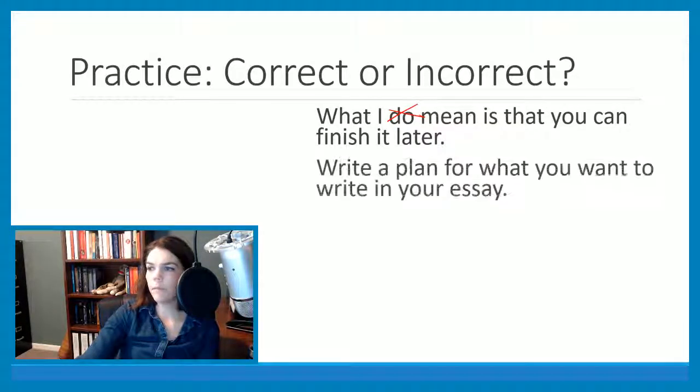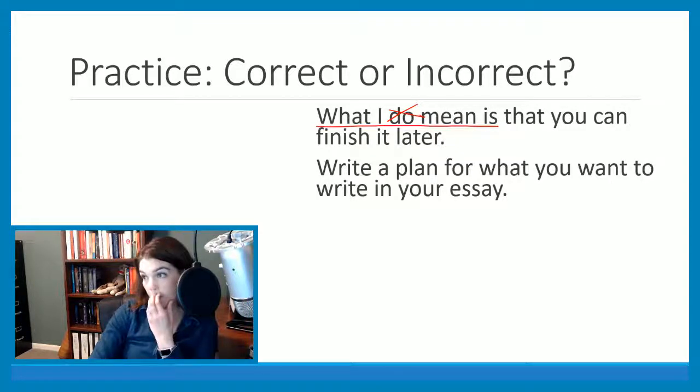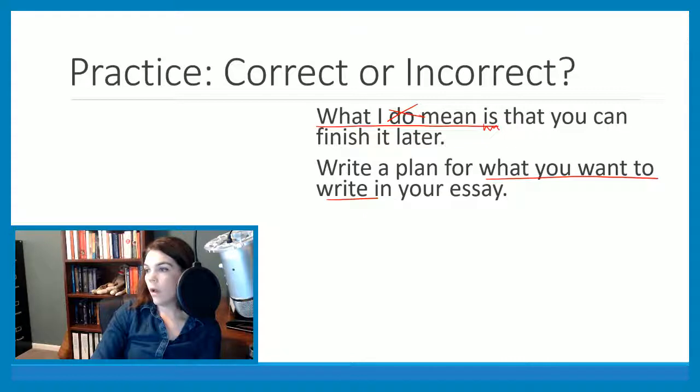How about this one? Write a plan for what you want to write in your essay. What do you think? This one is okay. So here's our noun clause. I should underline our noun clause here. Write a plan what you want to write. So we have our subject and our verb and our wh word there. So this one was incorrect. This is correct.